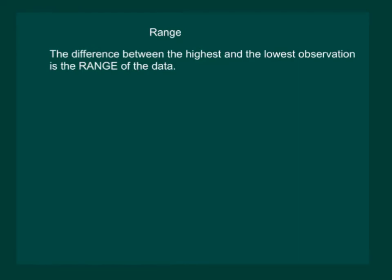Let us now understand what is the range of the data. The difference between the highest and the lowest observation gives us the idea of the spread of the observation. This can be found by subtracting the lowest observation from the highest observation. And we call the result the range of the observations.